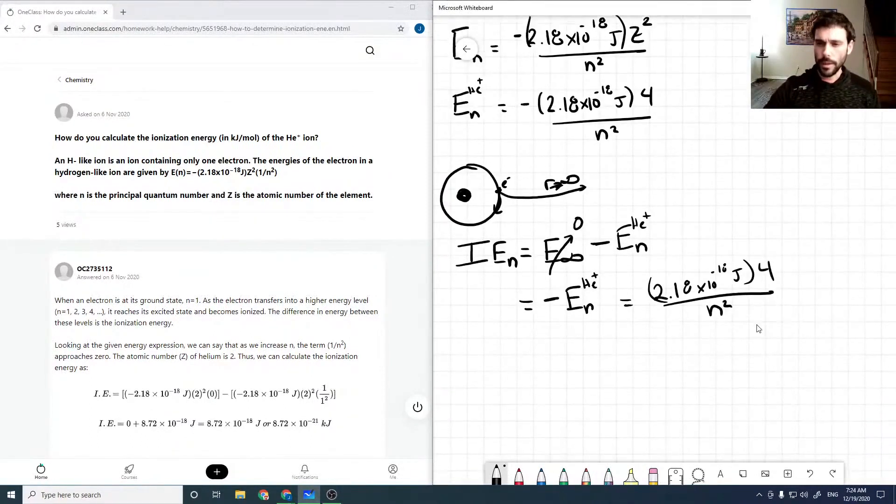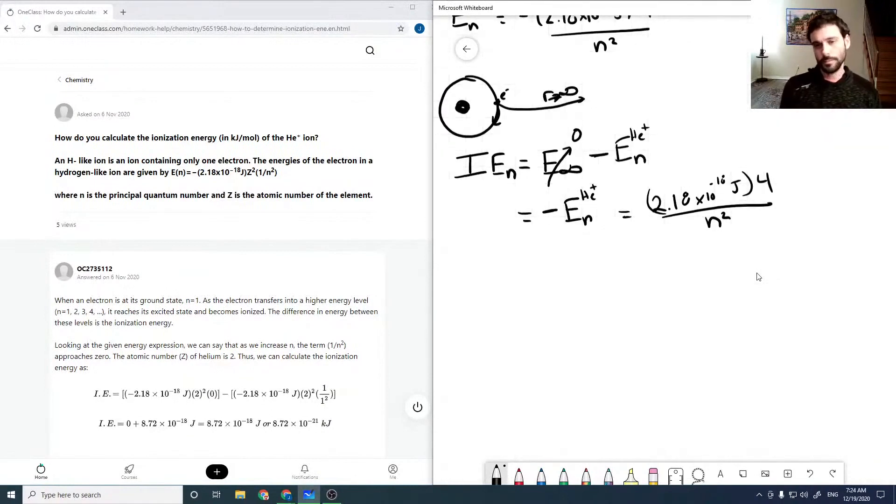Now, applying it—helium-plus has a single 1s electron, so n would be one. So the ionization energy for our 1s state would just be 2.18 times 10 to the minus 18 joules times 4,